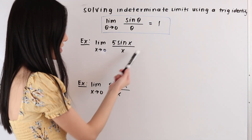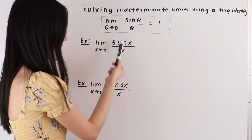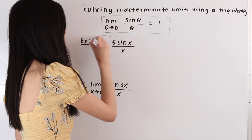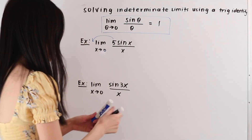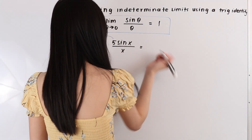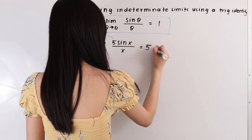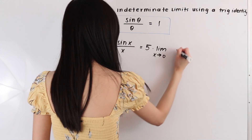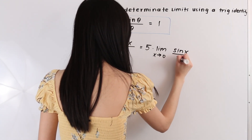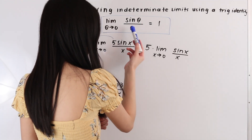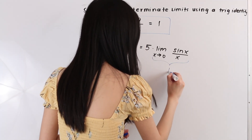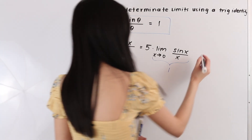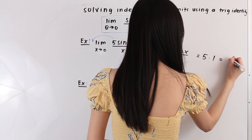We can see that this is pretty close to our identity, but we just have this five here. So what we can do is bring this five out using our limit law and rewrite this as five times the limit as x approaches zero of sine of x over x. By this identity, this is just equal to one, and so we have five times one which is equal to five.